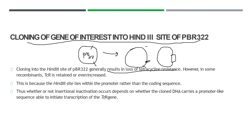The plasmid has an ampicillin region and a tetracycline region. The HindIII cut site lies within the tetracycline-resistant gene region. So when this region is replaced by new DNA, the tetracycline-resistant gene gets inactivated — same as with BamH1 — while the ampicillin region remains functional. However, in some recombinants, TCR is retained or even increased.